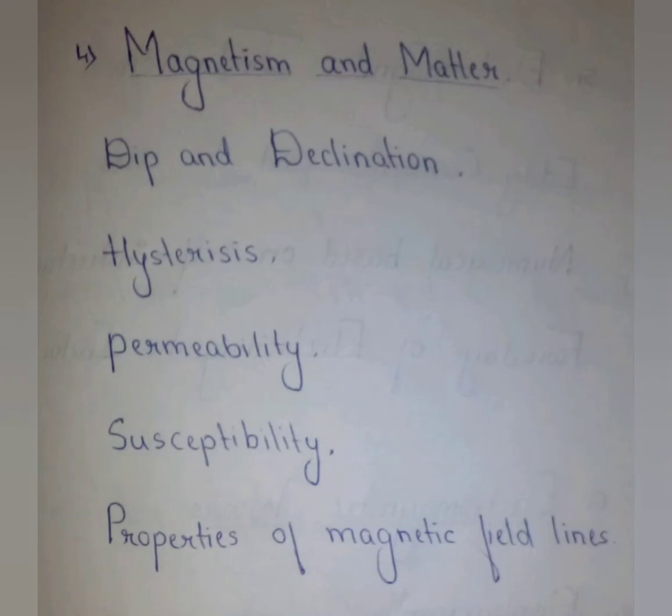Fourth chapter, Magnetism and Matter. Most important topics are: angle of declination, hysteresis, permeability, susceptibility, and properties of magnetic field lines.